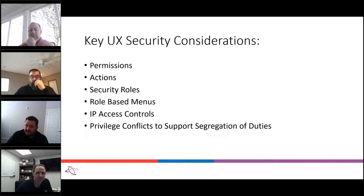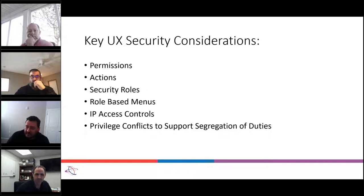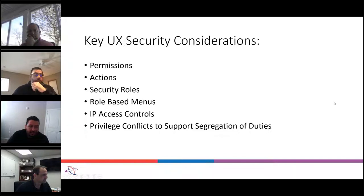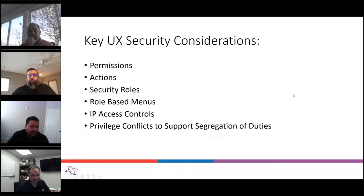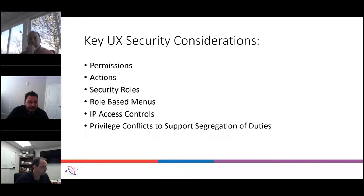These are all of the topics that we're going to be talking about today. First is permissions — everyone that already has classic knows what permissions are, but we're going to go through that. We're going to go through actions, which are the new permissions from UX or the equivalent of the permissions. We're going to go through security roles, and that's going to be our main focus today — the heaviest part of the presentation. We're going to talk about role-based menus, IP access controls, and privileged conflicts, better known as segregation of duties.